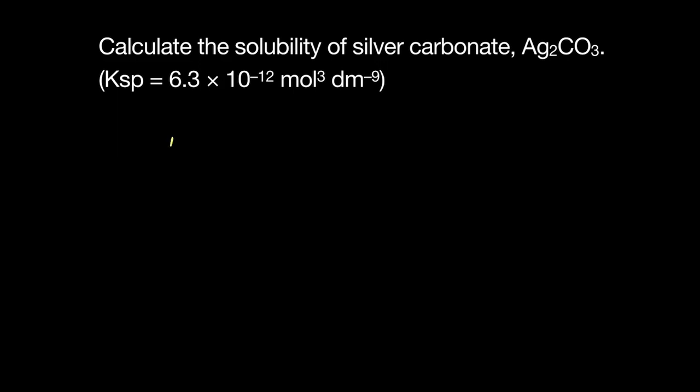So the equation would be Ag₂ carbonate will make 2 moles of silver ions and one mole of carbonate ion. And X would give me 2X and X. And the KSP would be silver ions squared because the coefficient is 2, and carbonate ions, just like the KC. And that is 2X whole squared and that is X. That should give you 4X³.